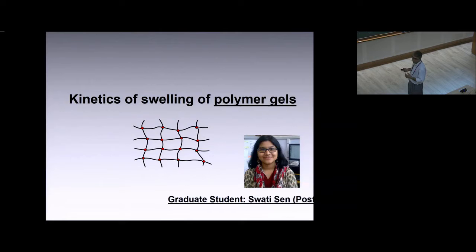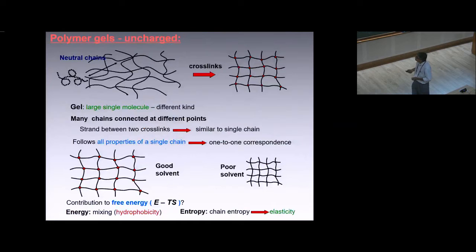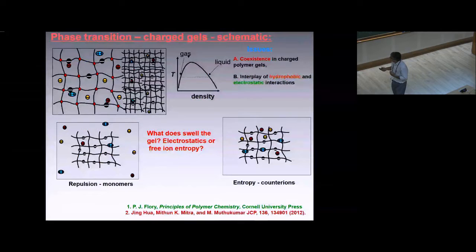First I look into swelling of polymer gels, done by Sati, she's in the audience and has a poster also. From a single chain we can have many chains to form a solution, they can be cross-linked to form a gel. The gel will have similar properties like a single chain - in good solvent it expands, poor solvent it collapses. If you have charges in a gel or solution, it's possible to see this coexistence, at least theoretically.